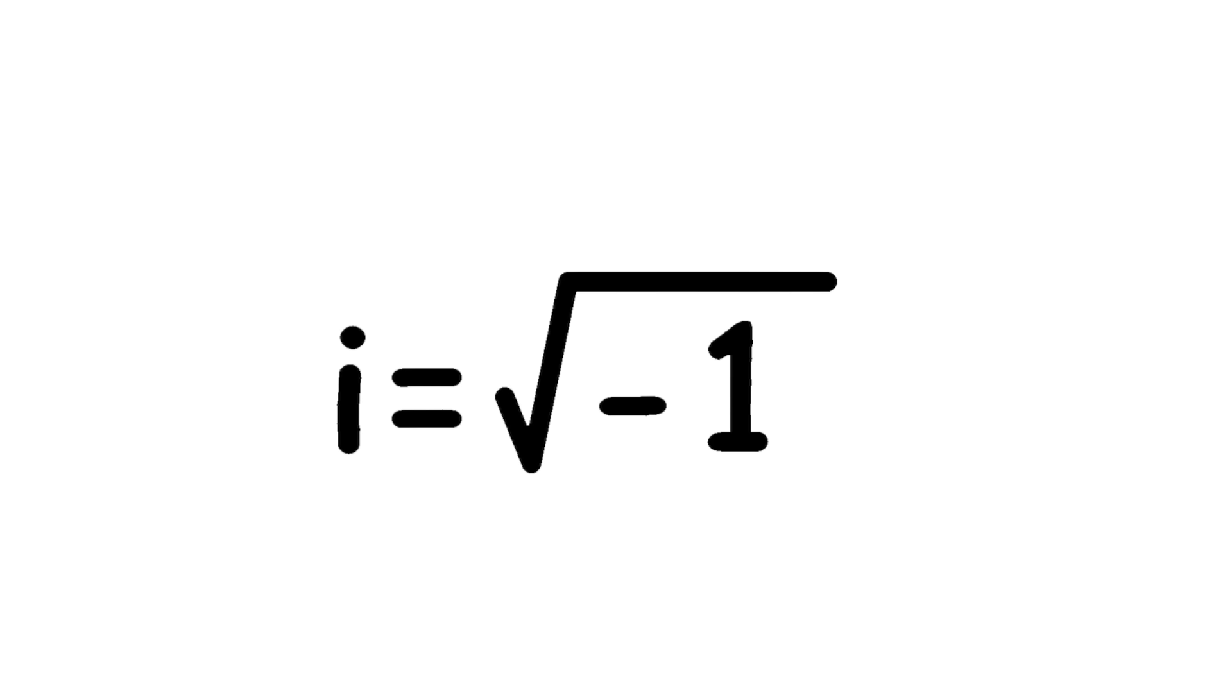The imaginary unit, denoted by the symbol i, is a mathematical constant representing square root of negative 1. The concept of the imaginary unit was developed over time by various mathematicians as a way to represent and work with square roots of negative numbers.